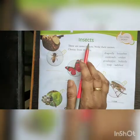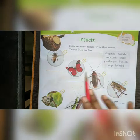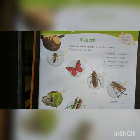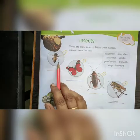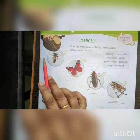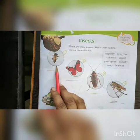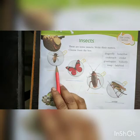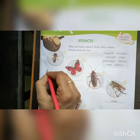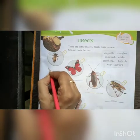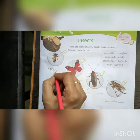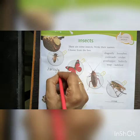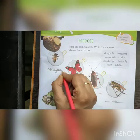In the next exercise, we have to recognize some insects. The first one — can you recognize this insect? This is a honey bee. Honey bee means madhu makhi.